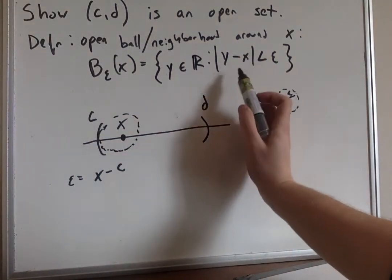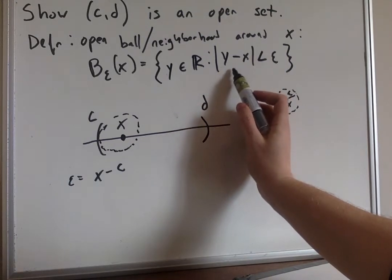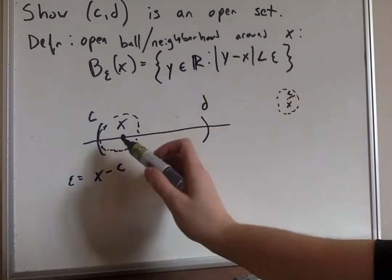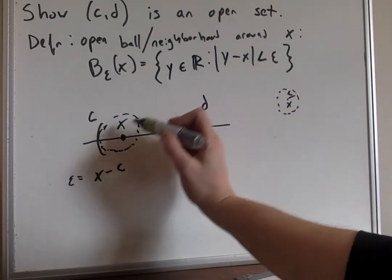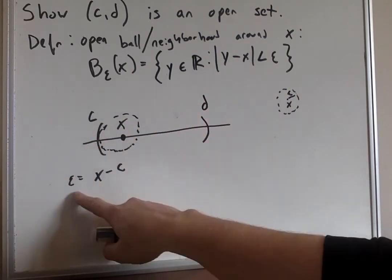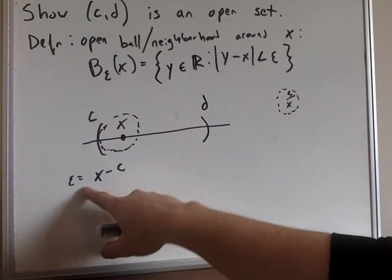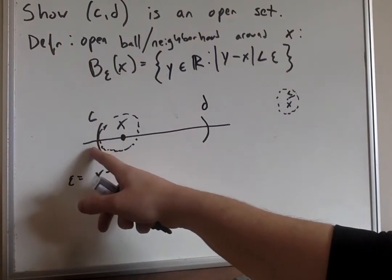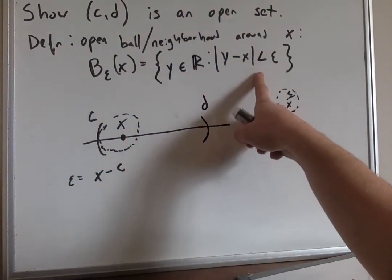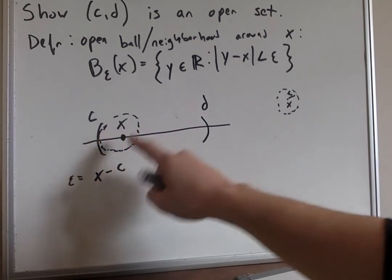And clearly, all y within that interval are contained within cd, right? Because it's less than this distance. This distance would put it at the endpoint, but it's less than that distance. So it's clearly contained within it.